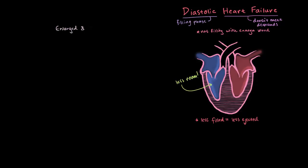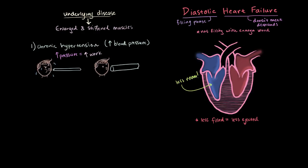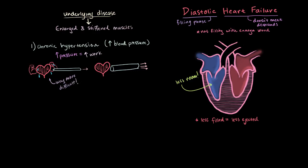How do we get these enlarged and stiffened muscles? Just like systolic failure, it's a secondary disease, meaning this growth and stiffening is caused by some underlying disease. The big one we understand most is chronic hypertension, or high blood pressure. When pressure in your blood vessels goes up, they become harder to pump against. This is like blowing into a straw versus a big tube — the smaller one is harder to blow through. The heart has to pump blood through these narrowed vessels, which is much more difficult, so the heart bulks up and gains muscle to pump against higher pressures. Diet and diabetes can both contribute to higher blood pressure, making them big risk factors for hypertension and therefore diastolic heart failure.